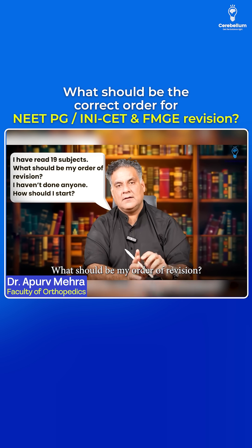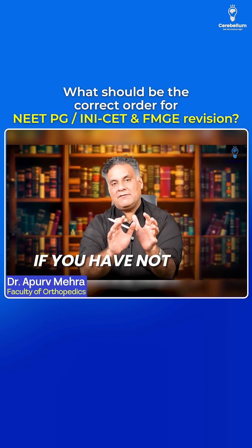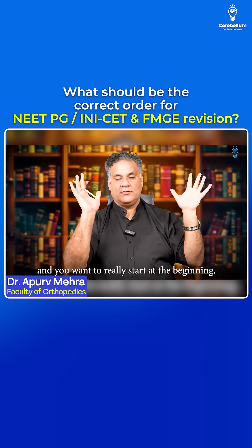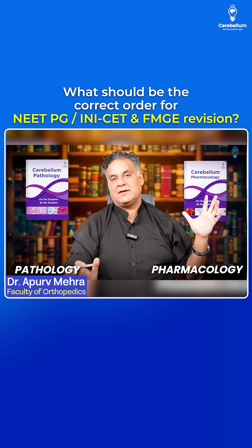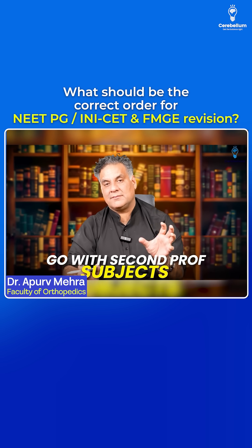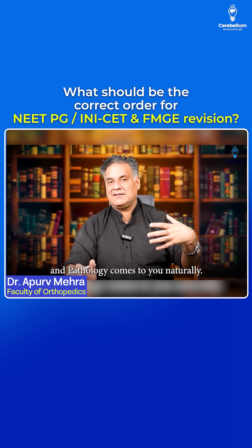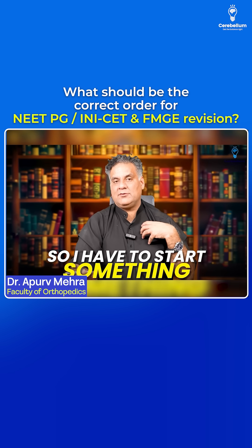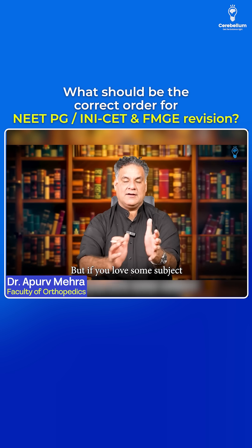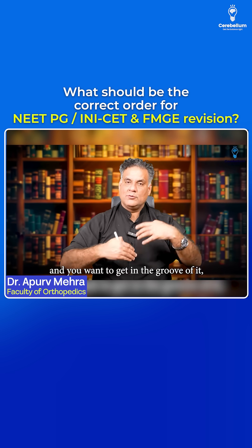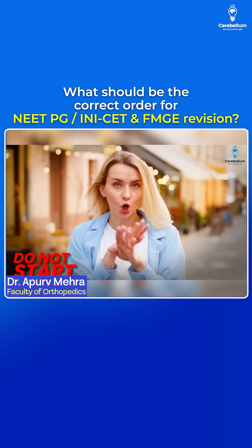What should be my order of revision if I haven't done anyone — how should I start now? If you have not done any subject and you want to really start at the beginning, my choice will be pathology or pharma. Go with second prof subjects because that's the prof you spend time with and path comes to you naturally. So if I have to start something, I will go with path or pharma to start with. But if you love some subject and you want to get in the groove of it, start with something you love.